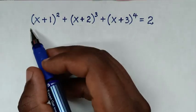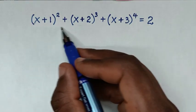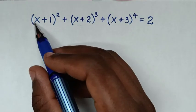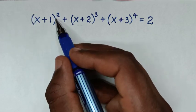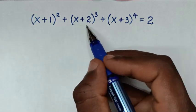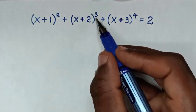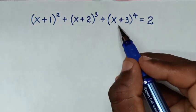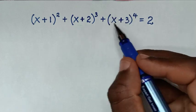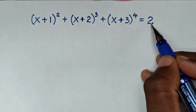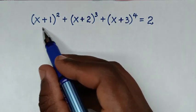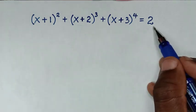Hello, you are welcome to solve this math problem which is (x+1)² + (x+2)³ + (x+3)⁴ = 2. We need to find the values of x from this equation.